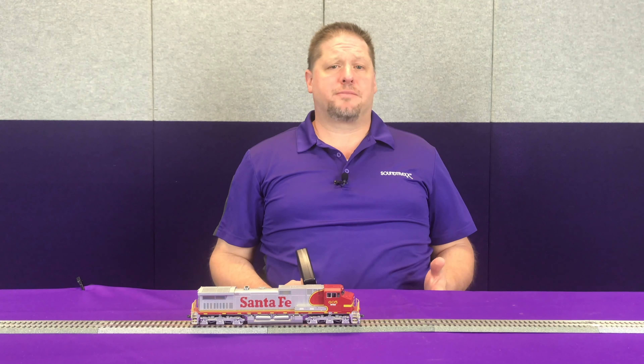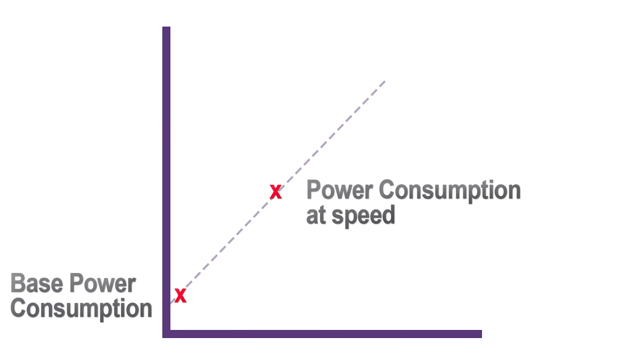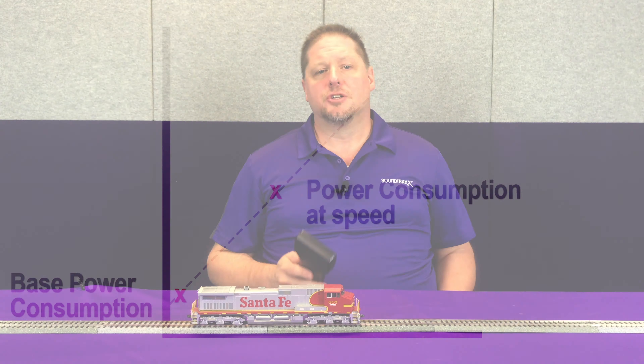The next step is to set CV 2.504 while the locomotive is moving. You'll want to do this somewhere around speed step 20 or 30 — somewhere around your normal operating speed. This is going to plot a second point on the graph. We're going to do this one at speed step 20, and it will internally calibrate the power consumption of the motor. As you can see in the chart, it draws a line representing the estimated power consumption of this motor.